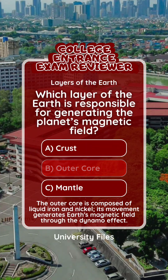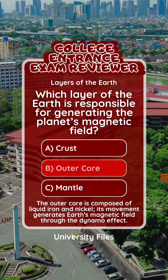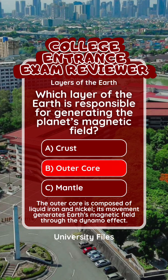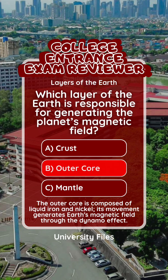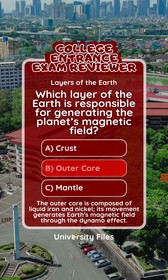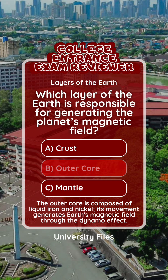The correct answer is letter B, outer core. The outer core is composed of liquid iron and nickel. Its movement generates Earth's magnetic field through the dynamo effect.